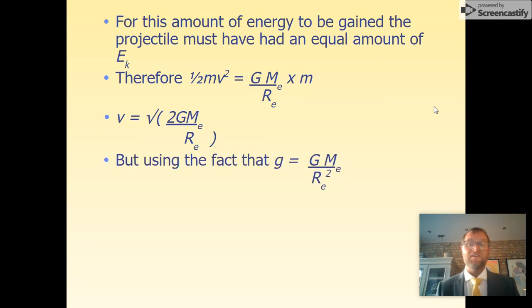Noting that little g equals GM/R², I can simplify that. The velocity required is the square root of 2 times g multiplied by the radius of the Earth.